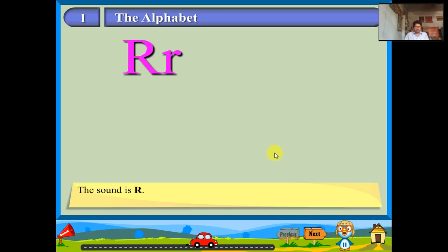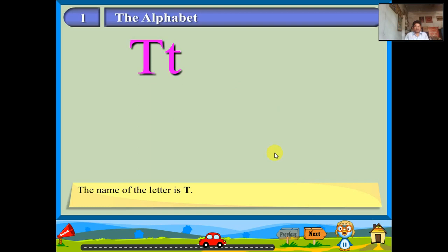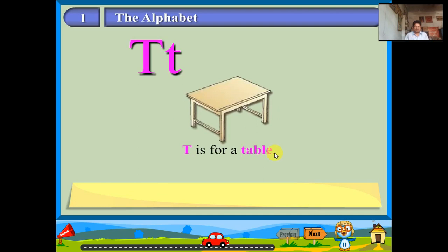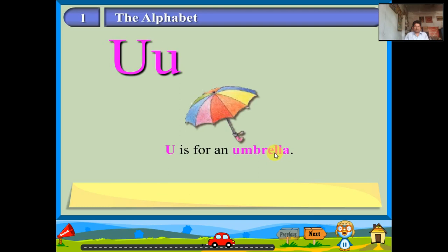The name of the letter is S. The sound of the letter is S. S is for a ship. The name of the letter is T. The sound of the letter is T. T is for a table. The name of the letter is U. The sound of the letter is U. U is for an umbrella.